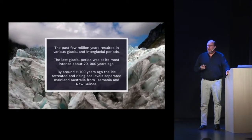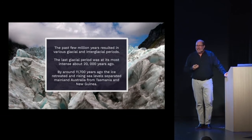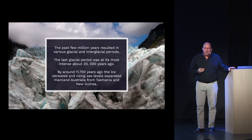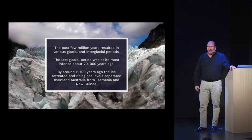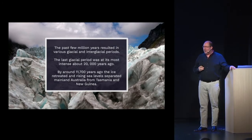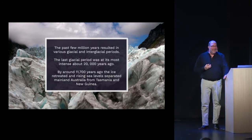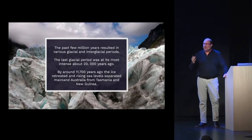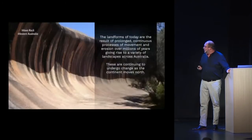The past few million years resulted in various glacial and interglacial periods, and the last glacial period was 20,000 years ago. There was ice in Australia 20,000 years ago — that's not that long at all. By 11,700 years ago, this ice retreated and rising sea levels separated mainland Australia from Tasmania and from New Guinea.